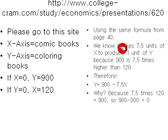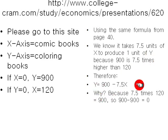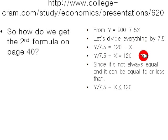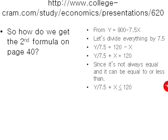So that means it takes 7.5 units of X, or comic books, to produce one unit of coloring books. That's why we get Y equals 900 minus 7.5X. Now let's get the second formula. Let's divide everything by 7.5. So Y over 7.5 equals 120 minus X. Then we bring the X over again: Y over 7.5 plus X equals 120. And since it's not always equal and it can be equal to or less than, we get Y over 7.5 plus X is less than or equal to 120.